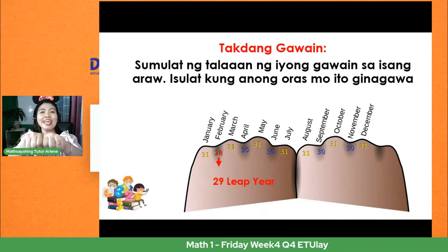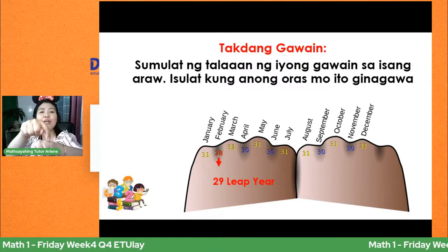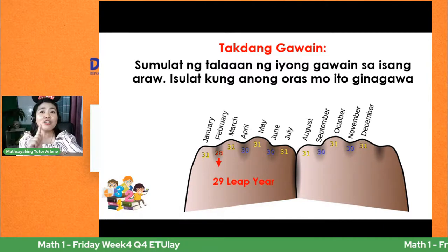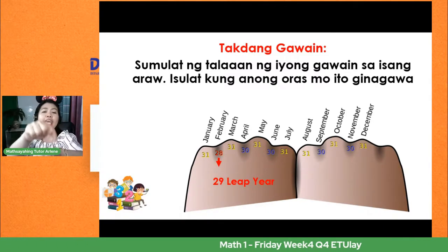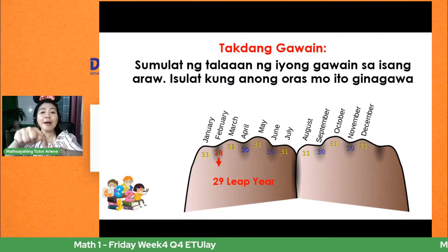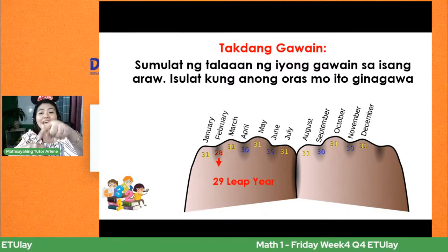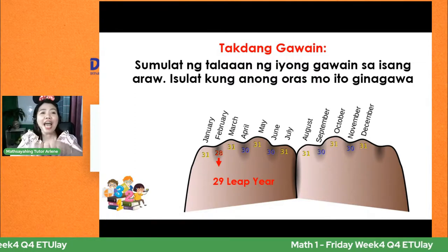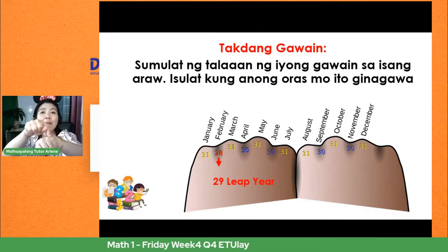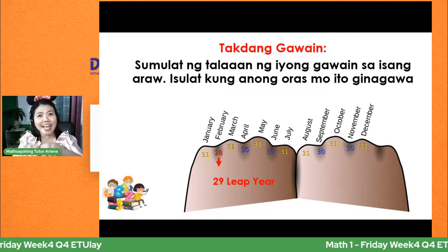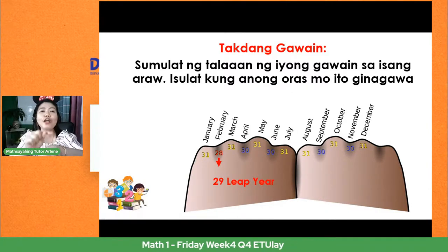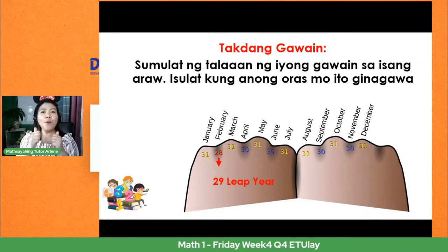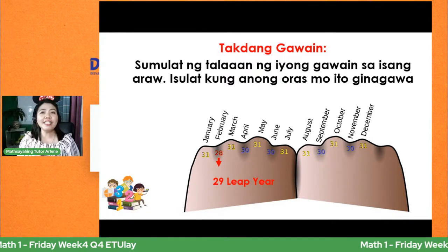Draw your knuckle or your fist at lagyan natin ang 12 months in a year. Tandaan: kasama yung in between ng dalawang joint. Enero, Pebrero, Marso — ang bawat bukong-bukong ay 31 days. At ang between, maliban sa pangalawa — yung February — ay 30 days. Ang February ay 28 o 29 days. Nagkakaroon tayo ng leap year every 4 years. Ang ika-100 years ay hindi leap year maliban kung pwede i-divide sa 400, kagaya ng year 2000.